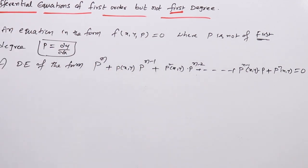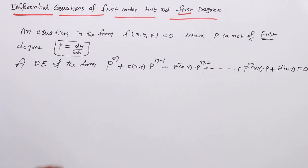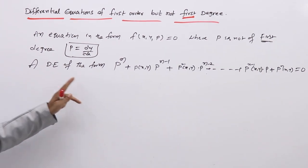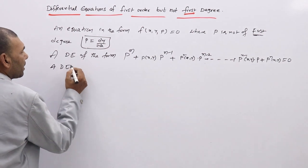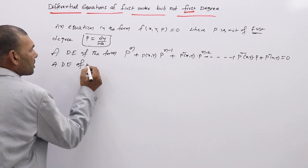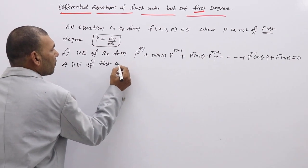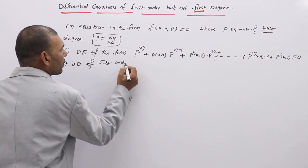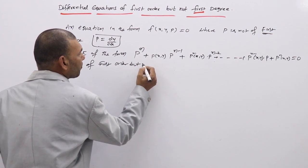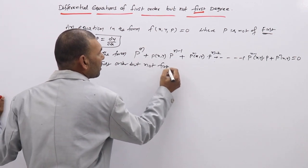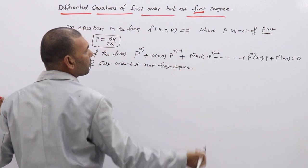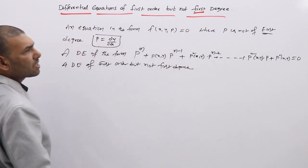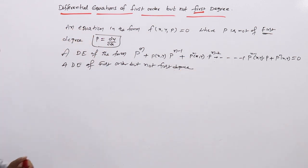This type of equation we call a DE of first order but not first degree. These type of equations we can easily identify.